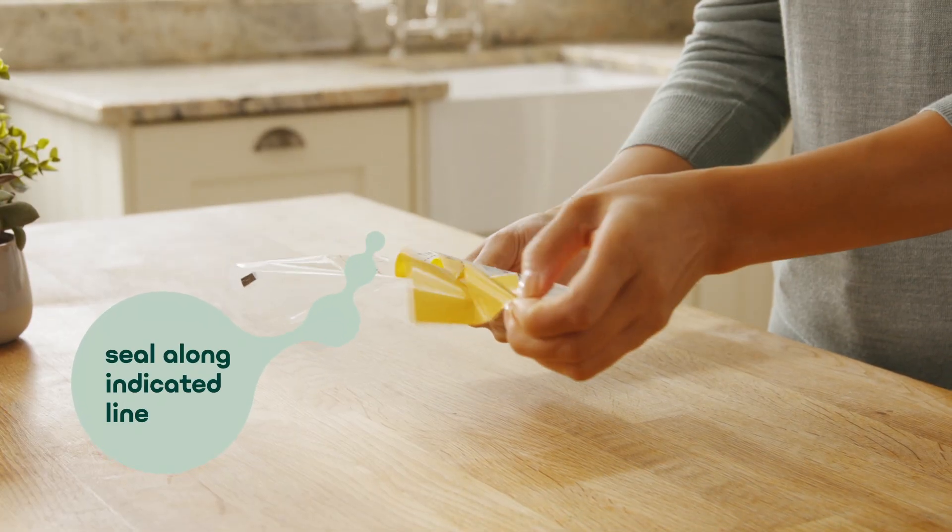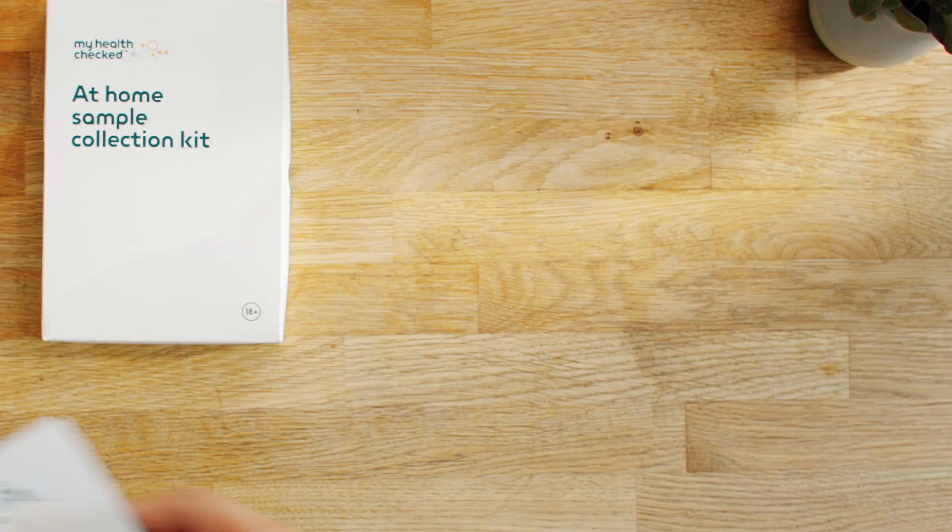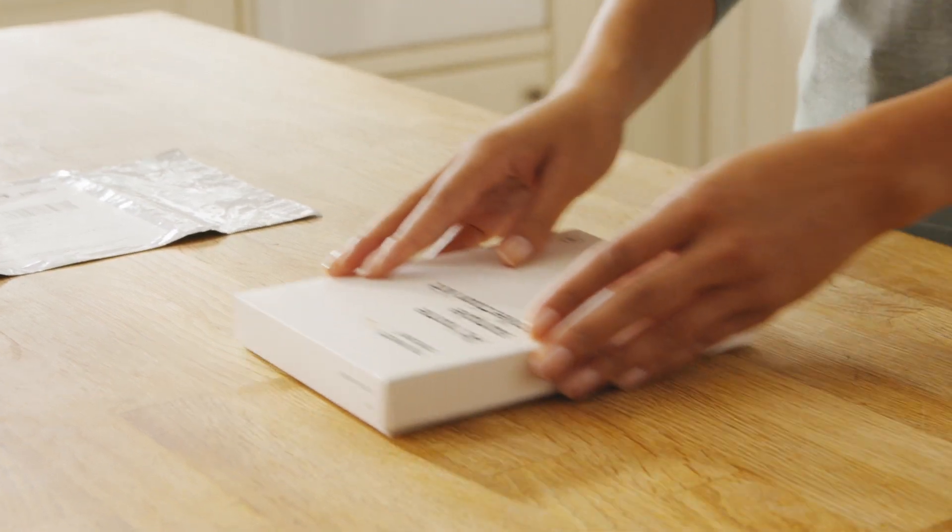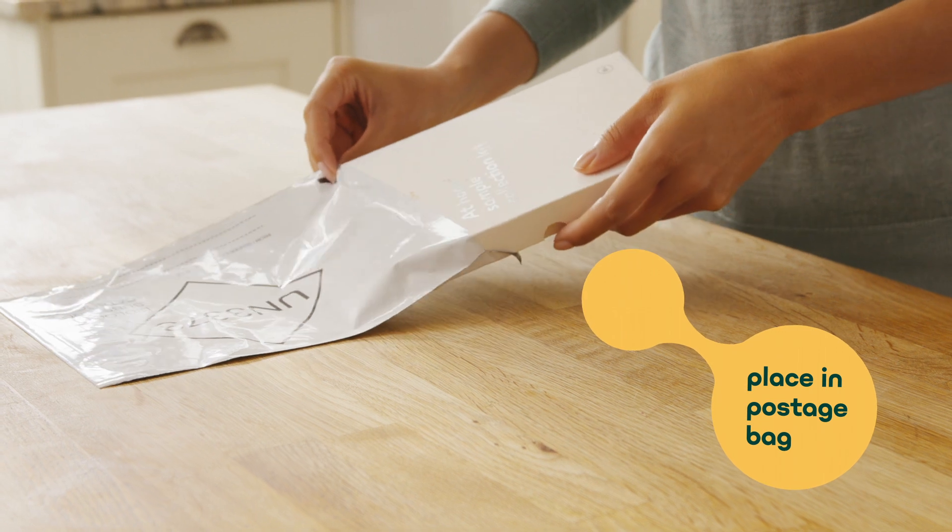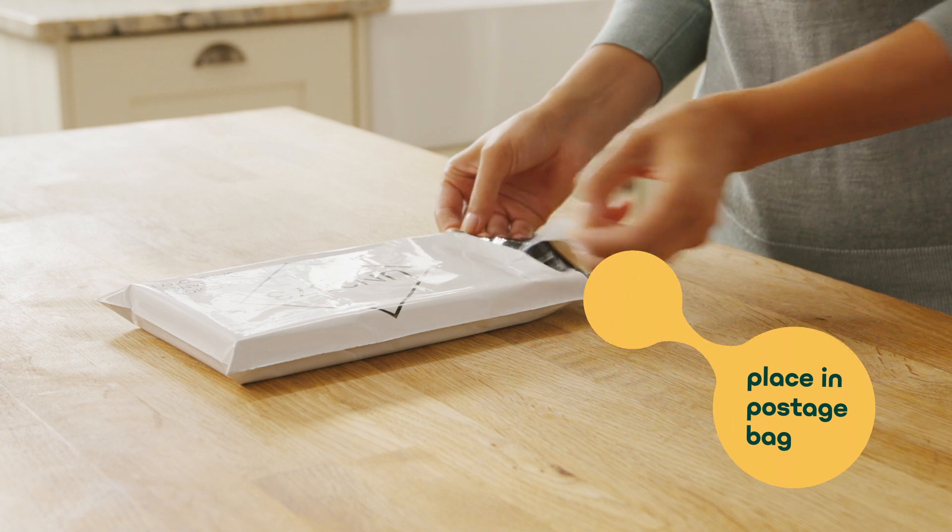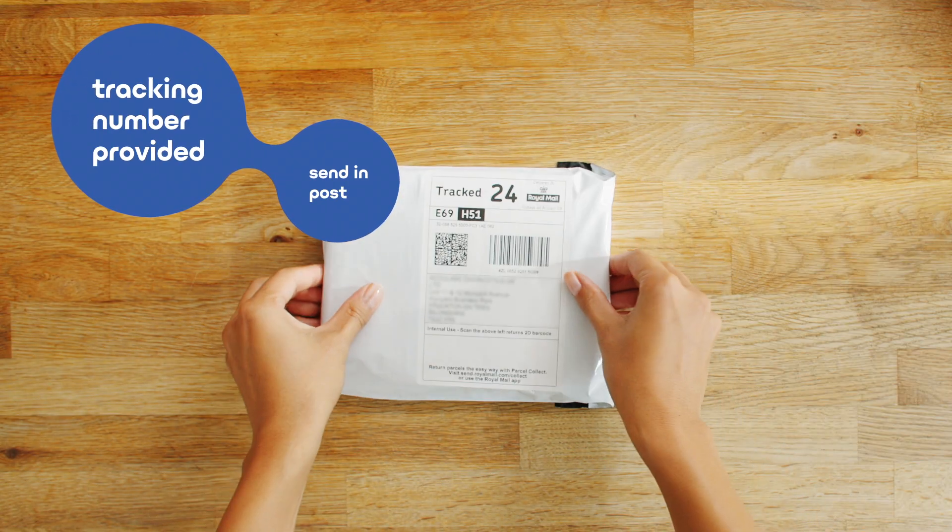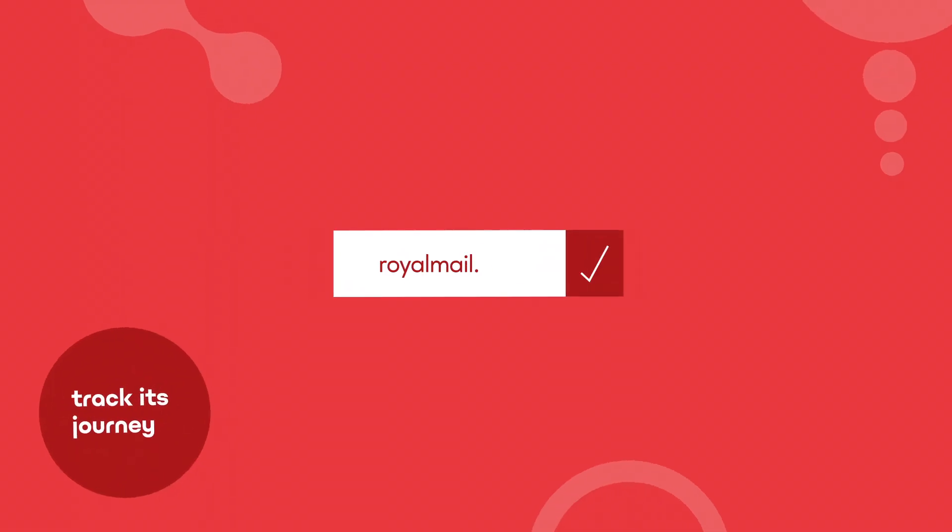Remove the adhesive strip. Fold the flap down and seal up to the indicated line. Keep your instruction leaflet to the side so you can make a note of your tracking number later. Put the transport bag containing your samples back into the original box, then place it inside the prepaid postage bag provided and return via any Royal Mail post box. To track your samples return to our lab, please make a note of the tracking number on your leaflet so you can track its journey on the Royal Mail website.